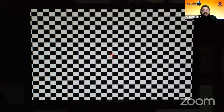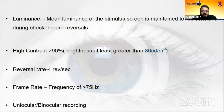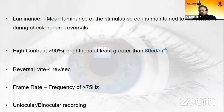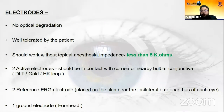The stimulus has a red central cross where the patient fixates. Luminance is constant with a high contrast between black and white checks — at least more than 80 candelas per meter square. The reversal rate is four reversals per second and the frame rate must be more than 75 Hz. Recording can be done monocularly or binocularly. For binocular recording, electrodes must be wired in both eyes; for uniocular, wire one eye or patch the other. Electrodes must not cause optical degradation, must be well tolerated, and should have an impedance of less than 5 kilohms.